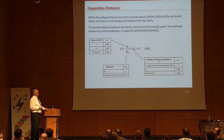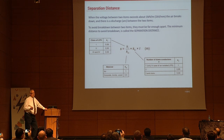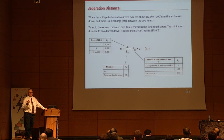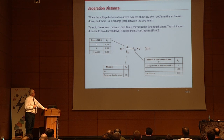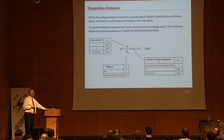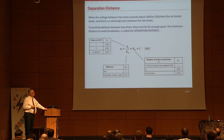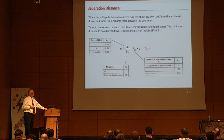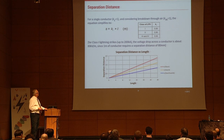The standard provides a formula for separation distance with several parameters. The Ki factor depends on the protection level — levels one through four with specific constants. The material factor Km is 1 for air and 0.5 for any other material. The Kc factor accounts for the number of conductors: 1 for a single down conductor, 0.66 for two, and 0.4 for three or more.